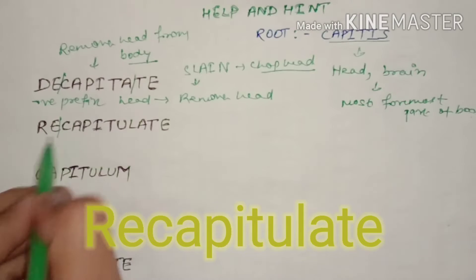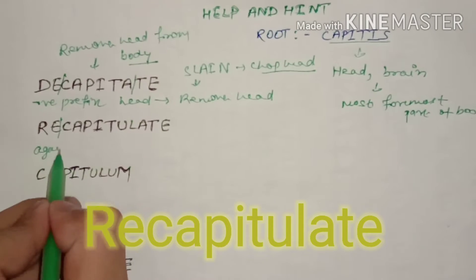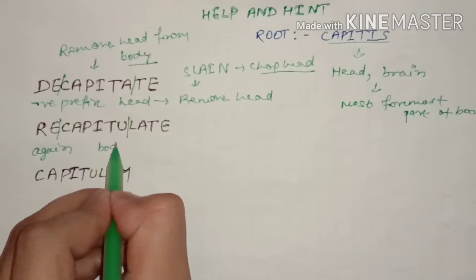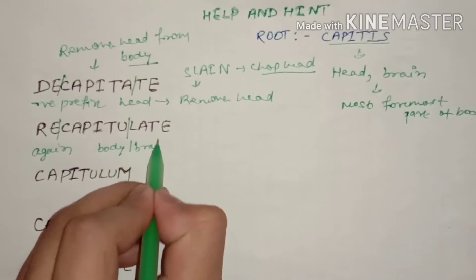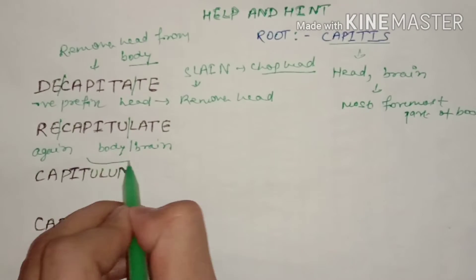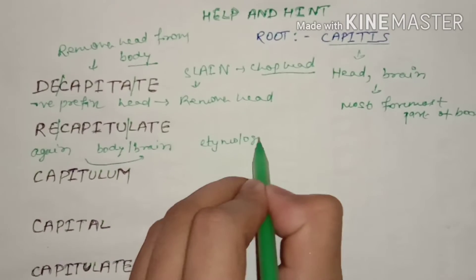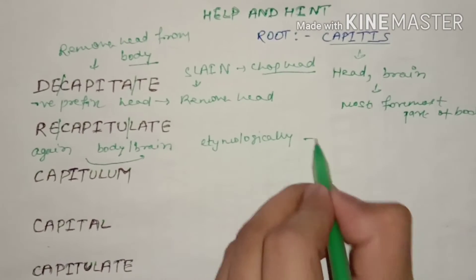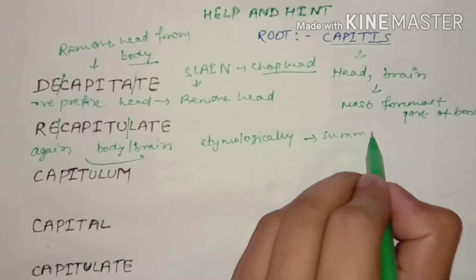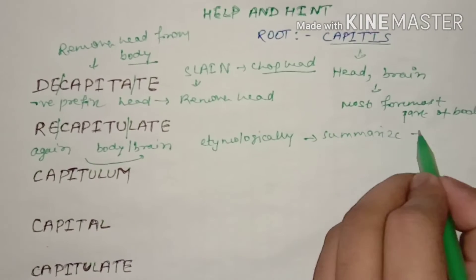Now next word, recapitulate. Re means again and capit which means body, even you can say brain. So again and brain, etymologically it means summarize, epitomize.